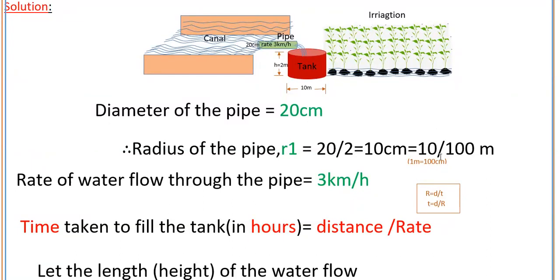Converting to meters: 1 meter equals 100 centimeters, so r1 is 10 by 100 meters. The rate of water flow through the pipe is 3 kilometers per hour, and here we have to find the time taken to fill this tank.